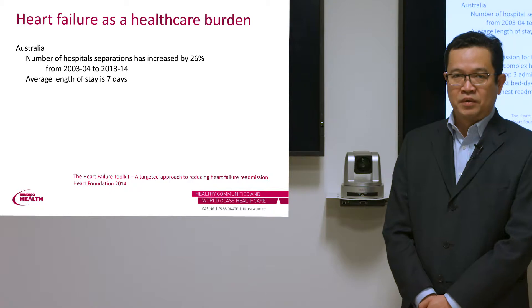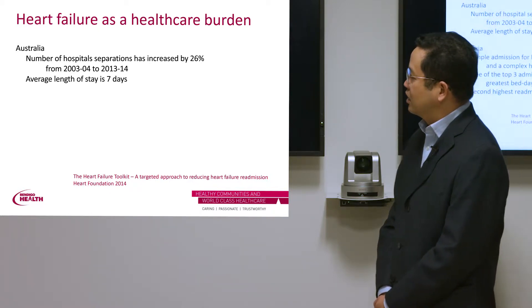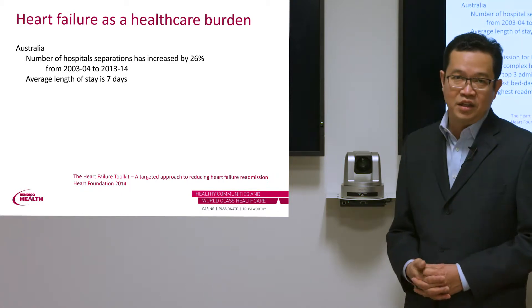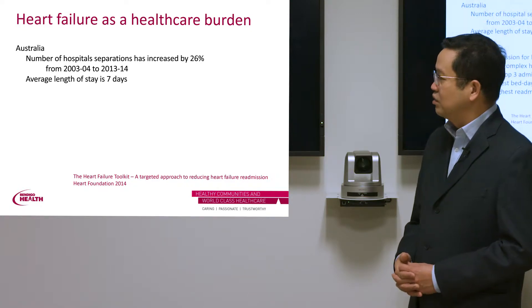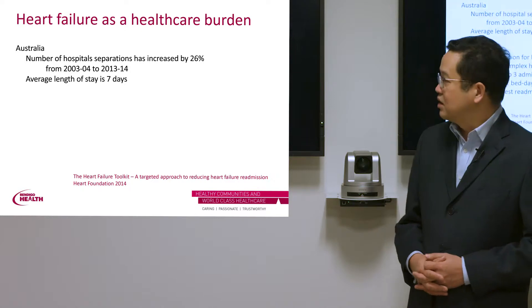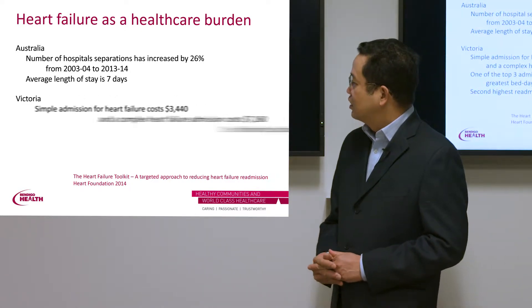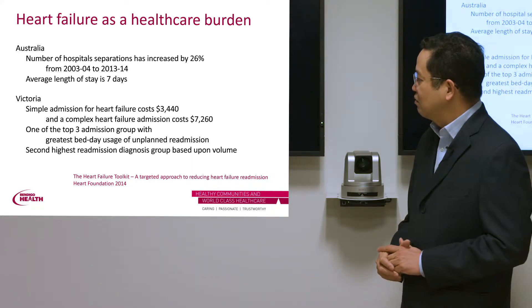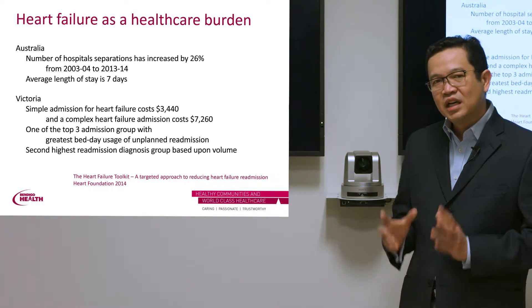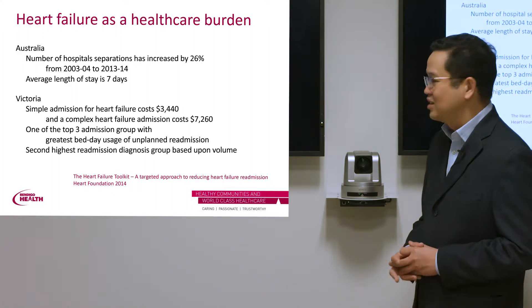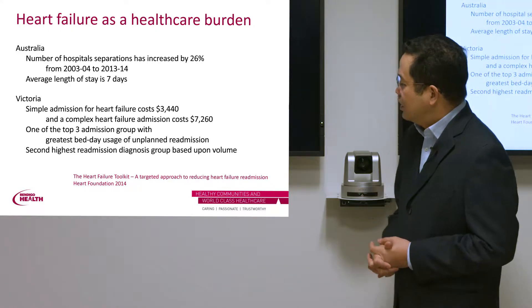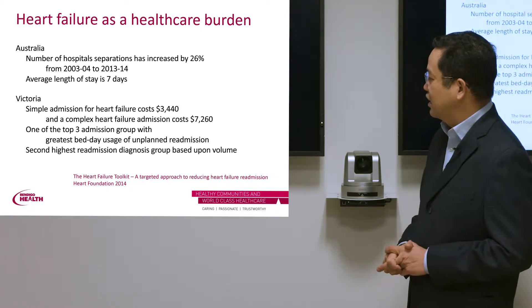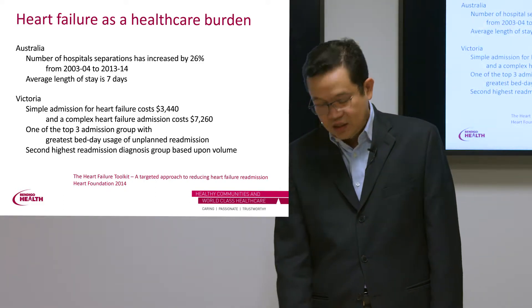It is a big healthcare burden. In Australia, the number of hospital separations has actually increased by about 26% over a period of about 10 years from 2003-2004 to 2013-2014. The average length of stay is about seven days, so this is a huge burden to healthcare cost. A simple admission for heart failure costs about $3,400 and a complex heart failure admission costs over $7,260 — not counting procedures and the cost of medical treatment. This is one of the top three admission groups with the greatest bed day usage of unplanned admissions and the second highest readmission diagnosed group based on volume, per the Department of Health Data in Victoria.